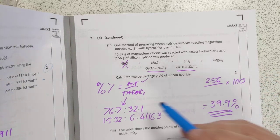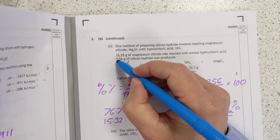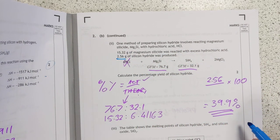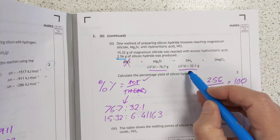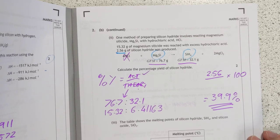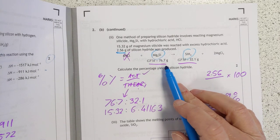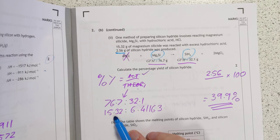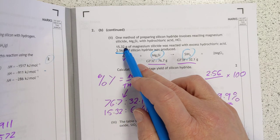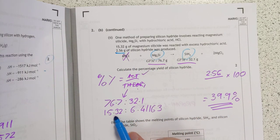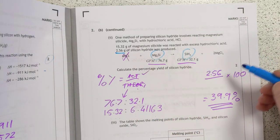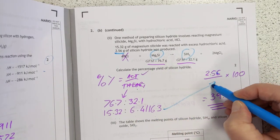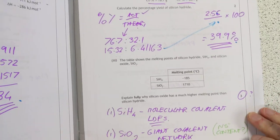Percentage yield. Actual over theoretical. Actual is easy, tells you that - 2.56 grams. Theoretically it's a wee bit tricky. You've got to get it from the balanced equation. We're interested, nice of them to highlight it, in these two chemicals here. And if you had 76 grams, you would have made 32 grams. If you do proportion, we actually had 15.32, which seems an oddly specific number. Why have they gone four significant figures there? 15.32 grams will give you that mass there. So pop 2.56 over that, times 100, you get 39.9%.